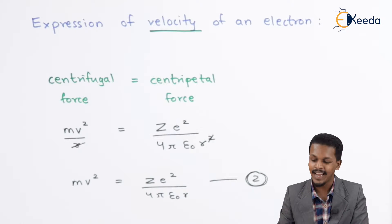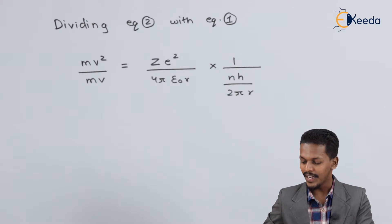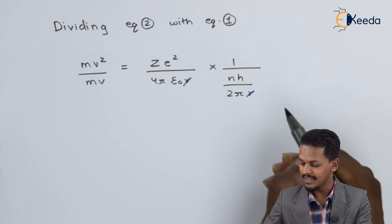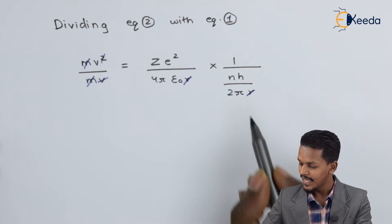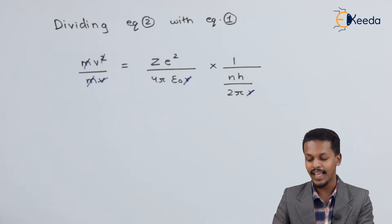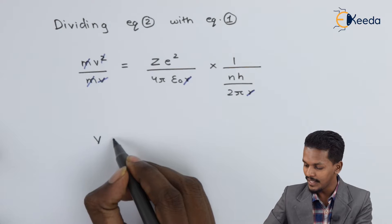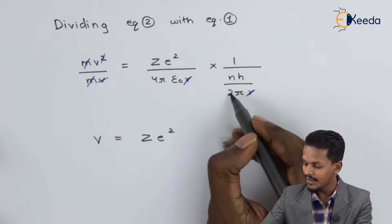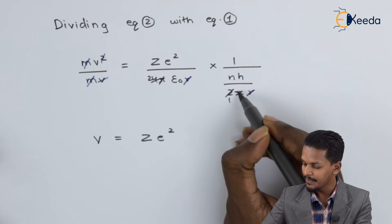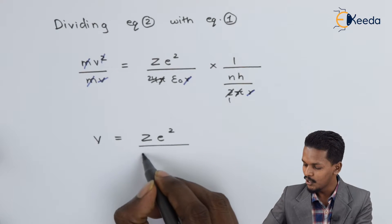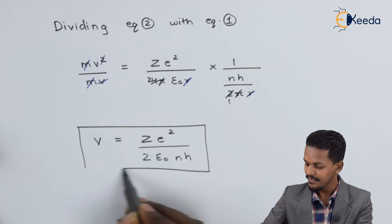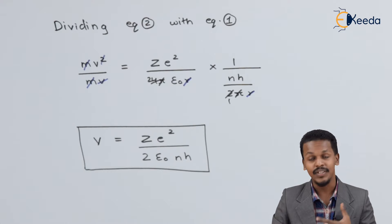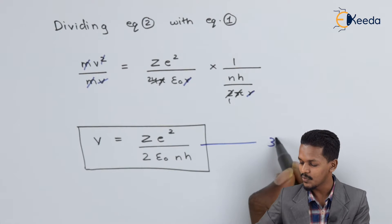We already have equation 1, so now let us divide equation 2 by equation 1. We can cancel out R (the radius), the mass of the electron, and one of the velocity terms. Therefore, the velocity of the electron is V = ZE² / (2ε₀NH). This is the expression for the velocity of the electron. Let us call this equation 3.